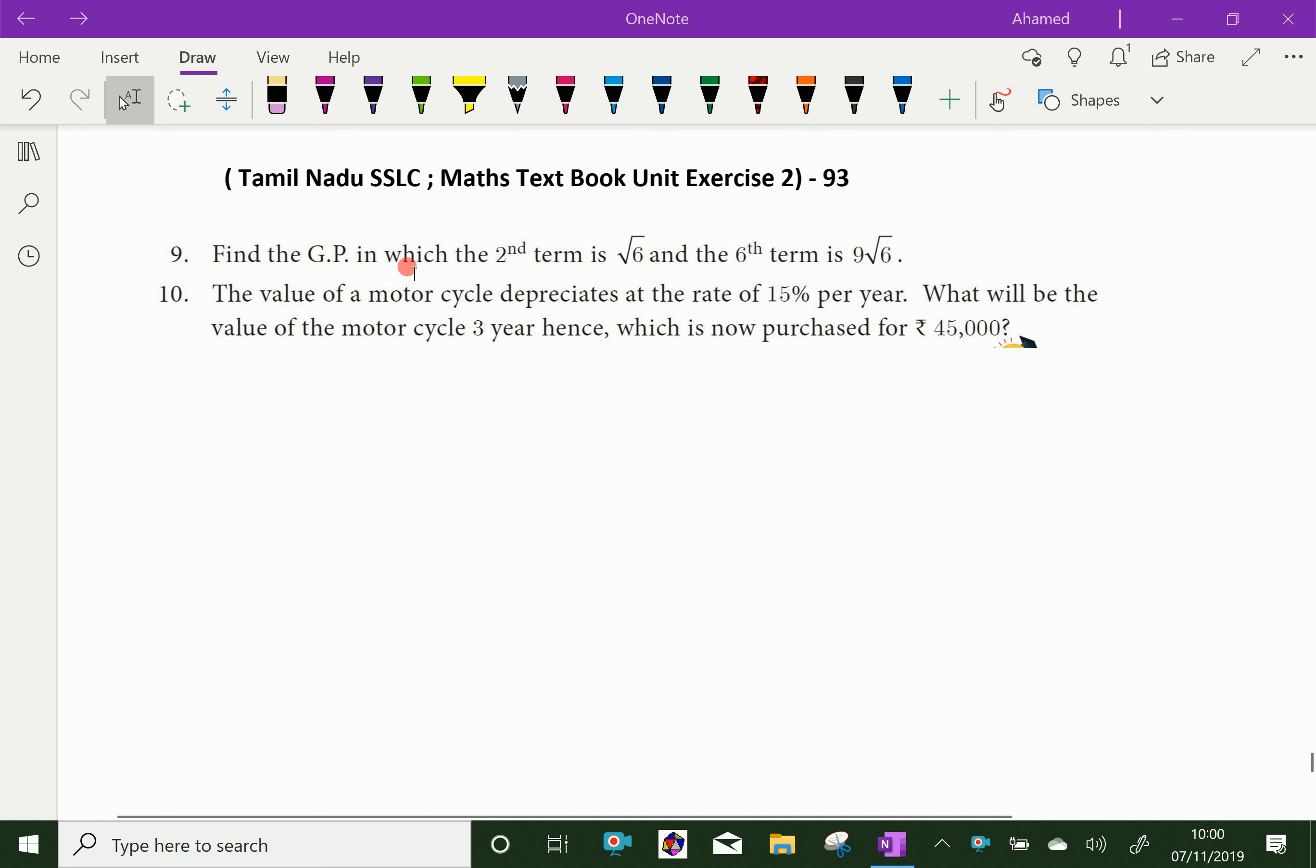Find the GP in which the second term is √6 and the sixth term is 9√6. Here the given thing is second term T2 is √6 and T6 is 9√6.